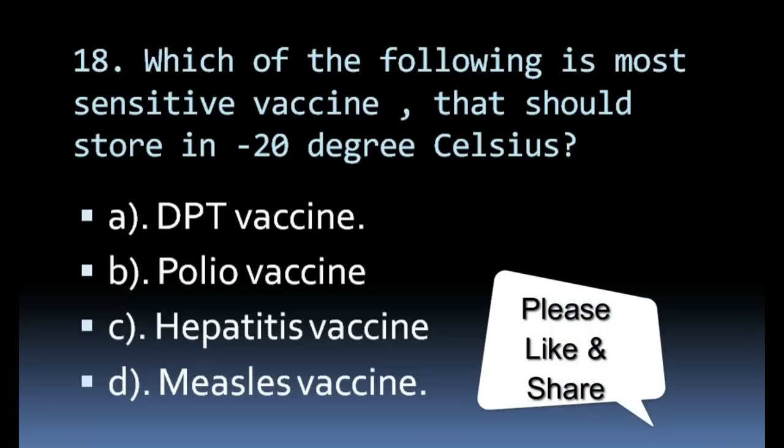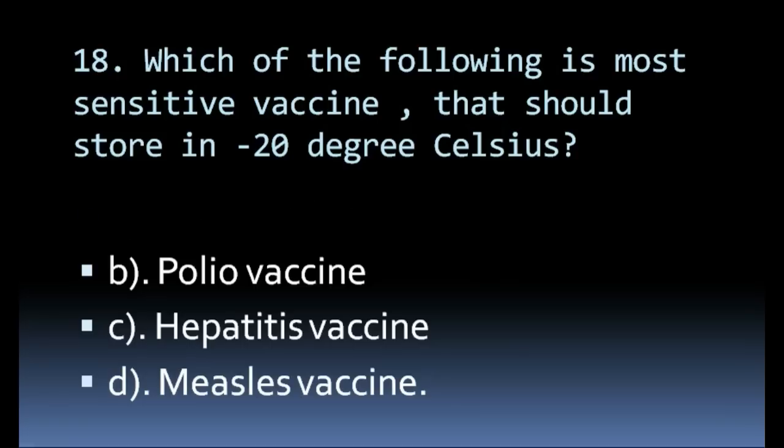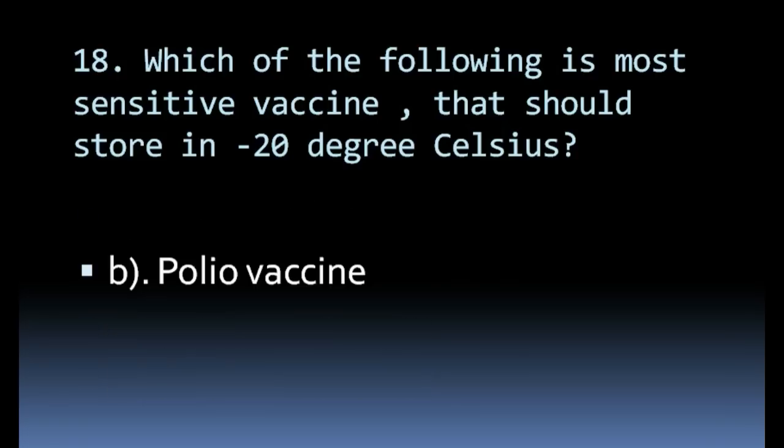Which vaccine cannot be stored at 20 degrees Celsius? Options: DPT vaccine, polio vaccine, hepatitis vaccine, measles vaccine. Correct answer: polio vaccine.